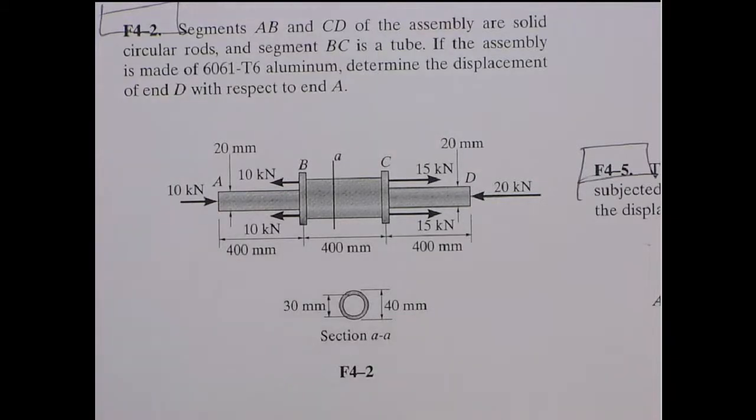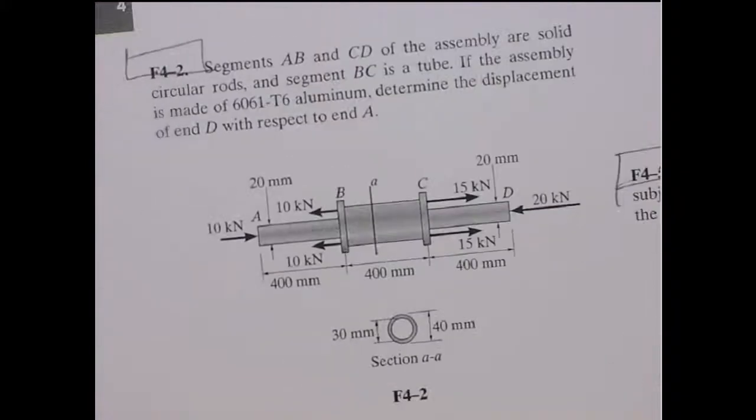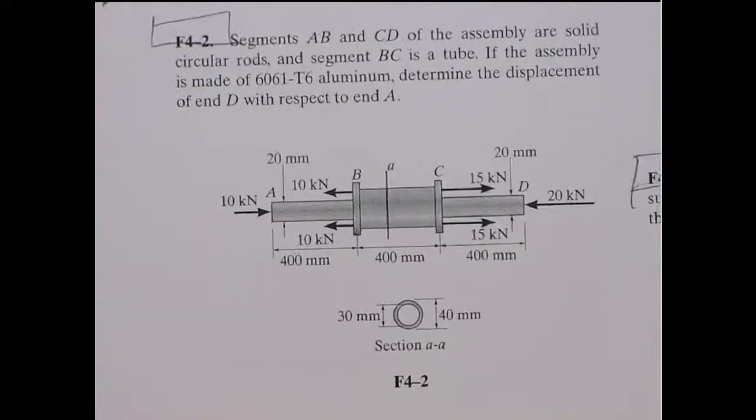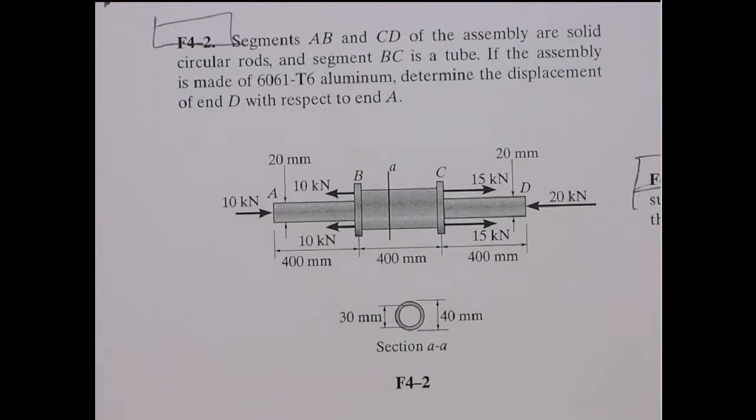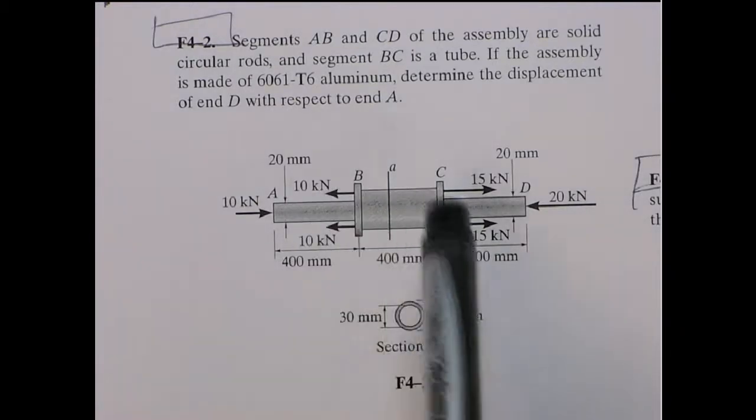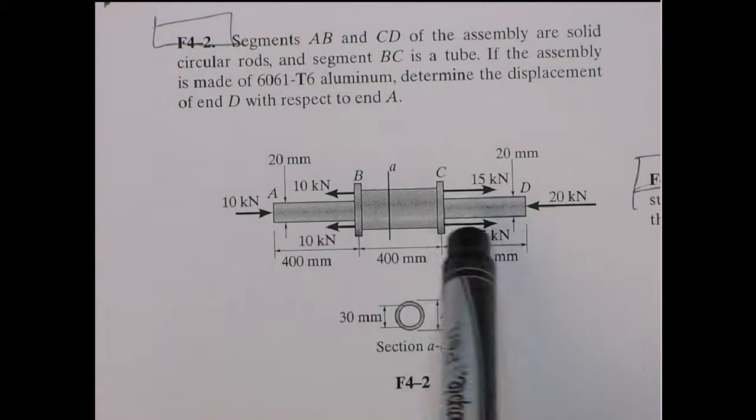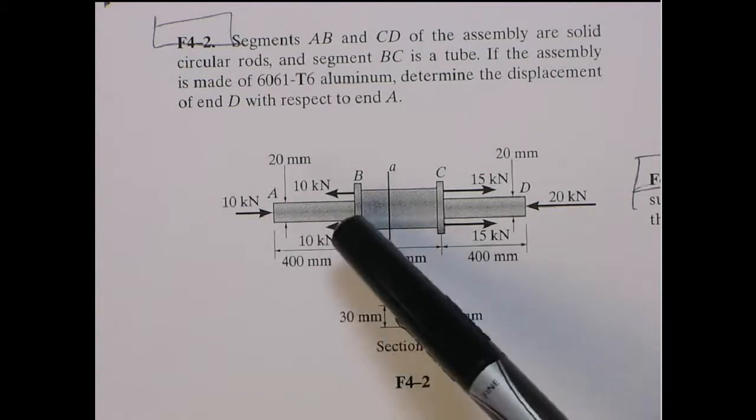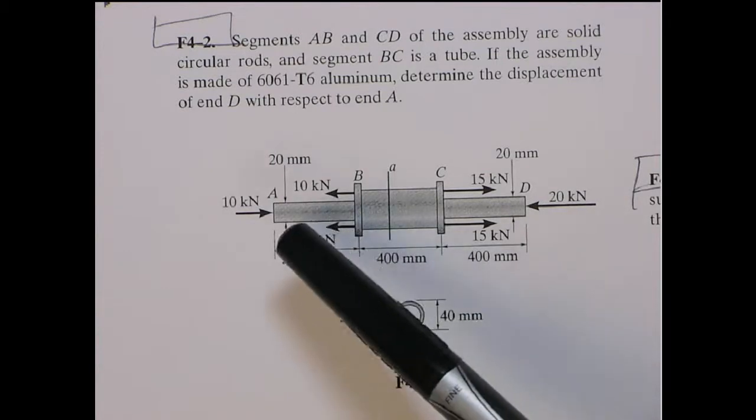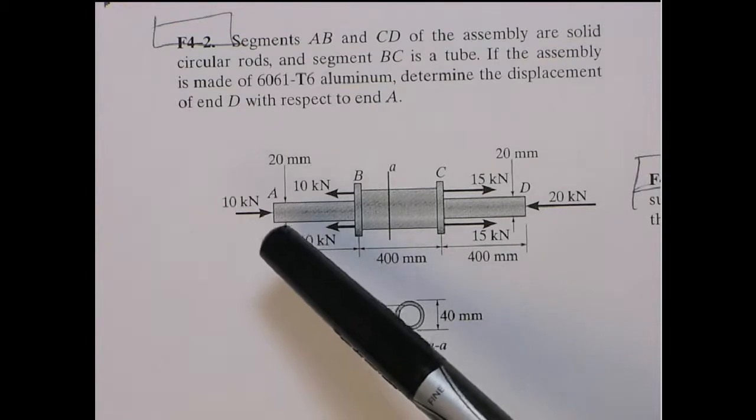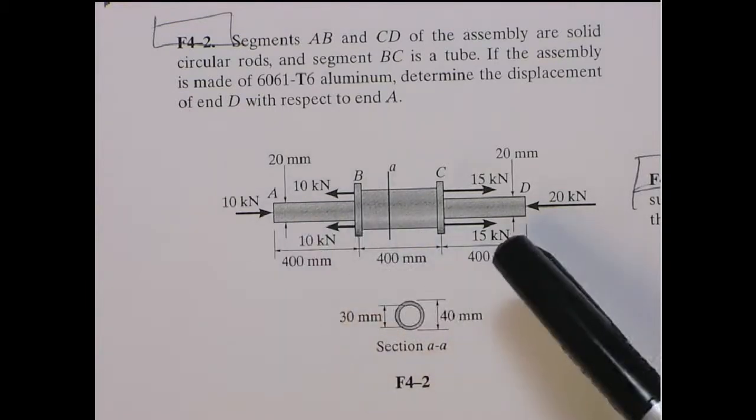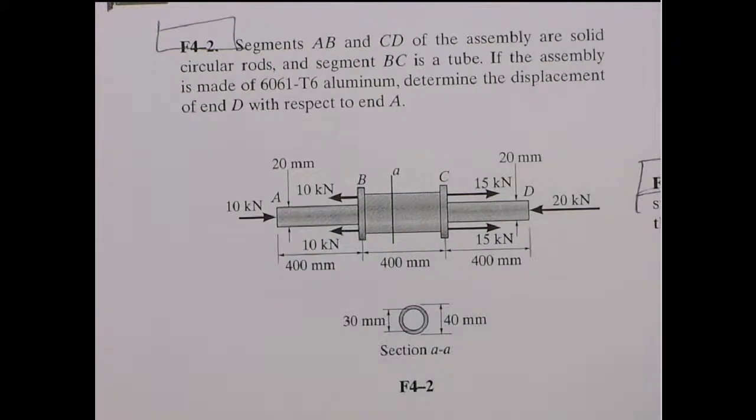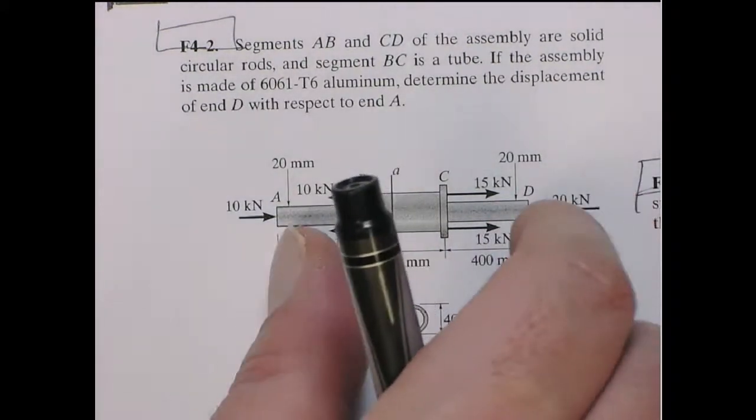Okay, so in this one we'll solve problem F42. We've done one similar to this in class. It's just maybe a little more involved. It's a tube with multiple sections. The ends are solid, the center is hollow, as shown here. And it's loaded as follows. And they want you to figure out the displacement of D with respect to A. So basically, how much this whole thing extends or contracts.